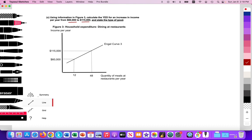Here again, we see that incomes are rising from $60,000 to $115,000 a year. And the consumption per year at eating out at restaurants is increased from $12,000 to $48,000, right? As a hypothetical example.